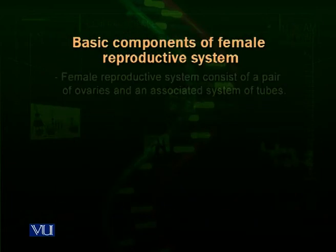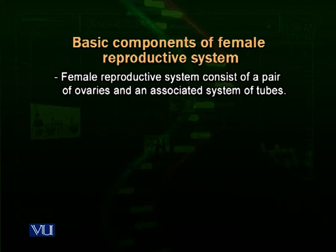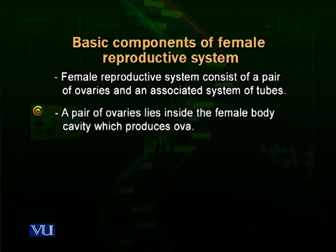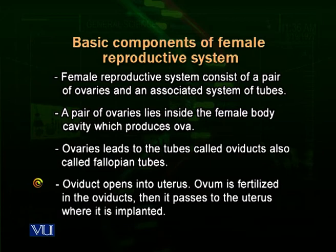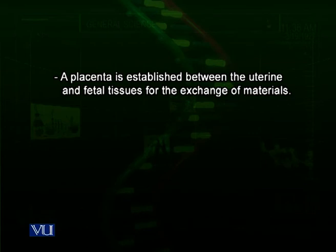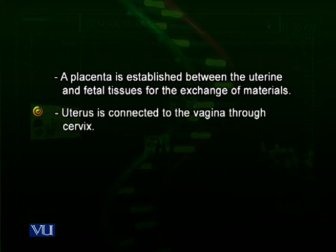The female reproductive system consists of a pair of ovaries and an associated system of tubes. Ovaries lie inside the body cavity and produce ova and hormones. Ovaries lead to tubes called oviducts, also called fallopian tubes, which open into the uterus. The ovum is fertilized in the oviducts and then moves to the uterus where it is implanted — attaching to the uterine wall, establishing a placental connection for exchange of materials. The uterus is connected to the vagina through the cervix.